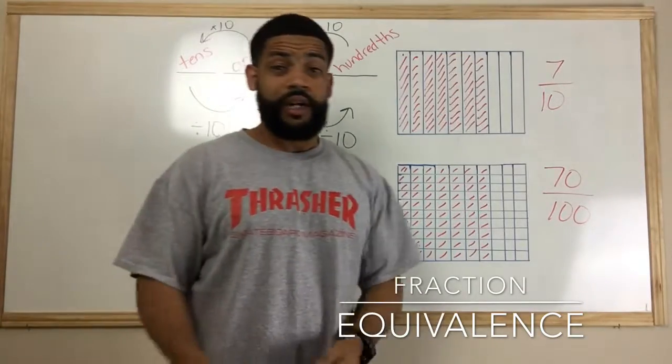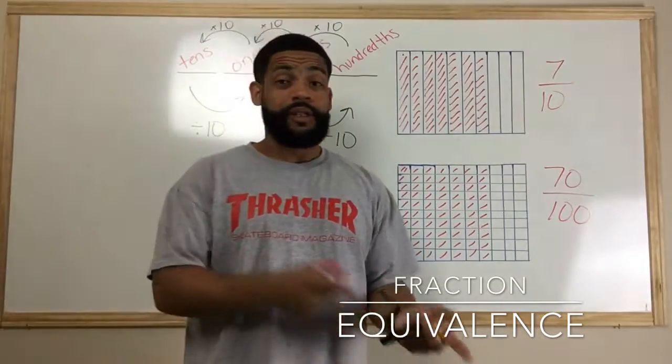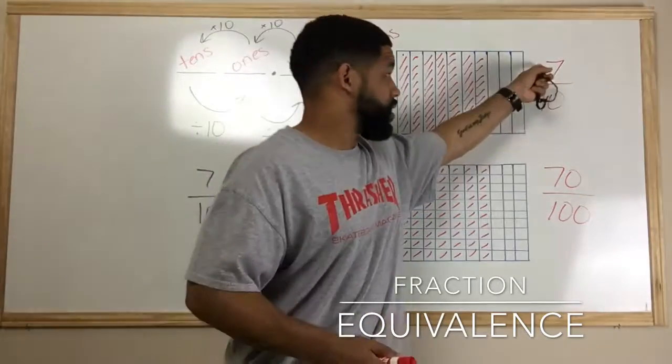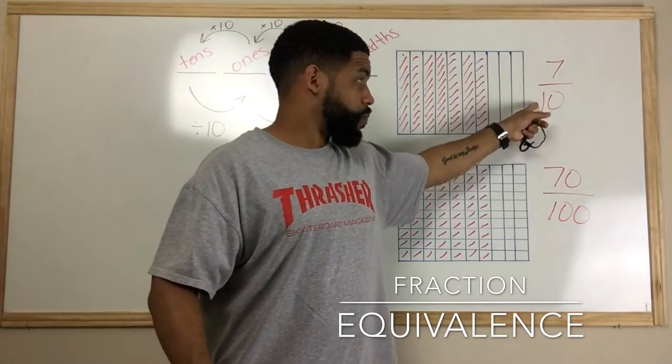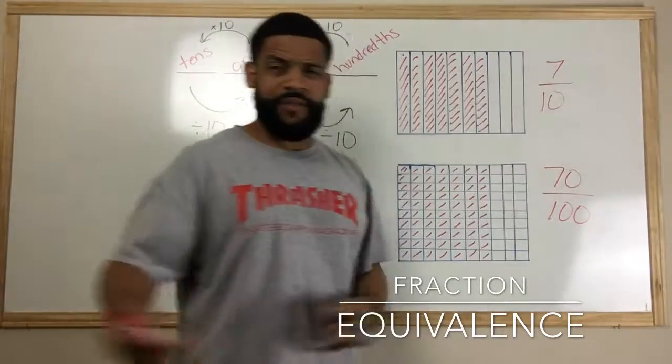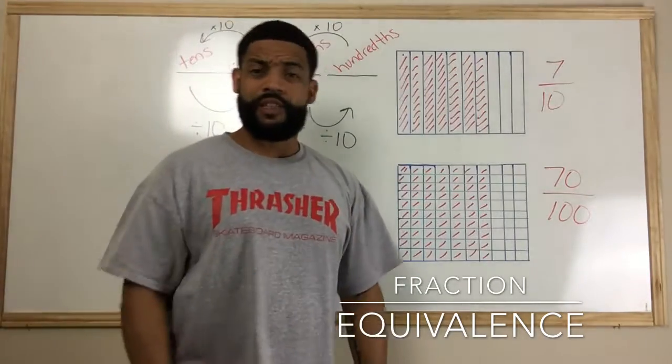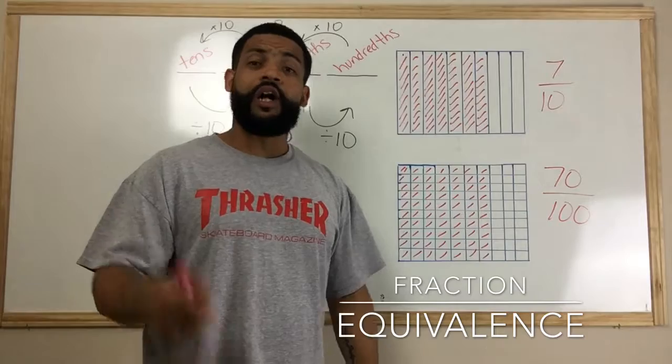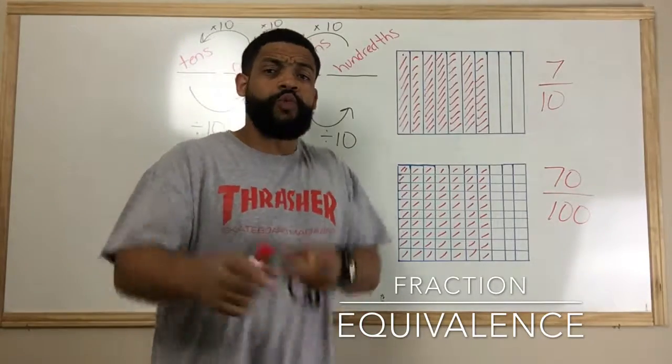And remember, when we're doing equivalent fractions, whatever you do to the denominator, you have to do to the numerator. So if I take 7 and if I multiply the 10 by 10, then I must take the 7 and multiply it by 10 to get 70. So 7/10 is equivalent to 70/100.